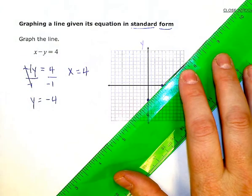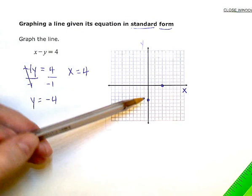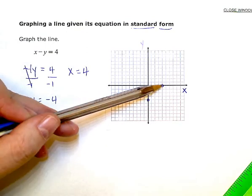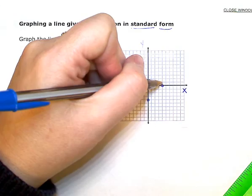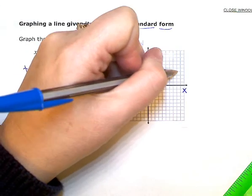If I wanted a few more dots to just make my line accurate, I know to get from one dot to the next, I have to go up 4, over 4. So I could do that again if I wanted to. I don't have to.